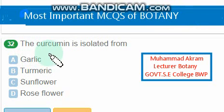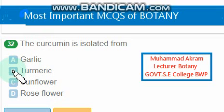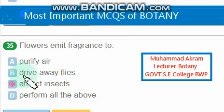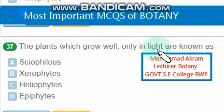Curcumin is isolated from turmeric — that is the right option. Flowers emit fragrance to attract insects — the right option is option C. Plants which grow well only in light are known as heliophytes.